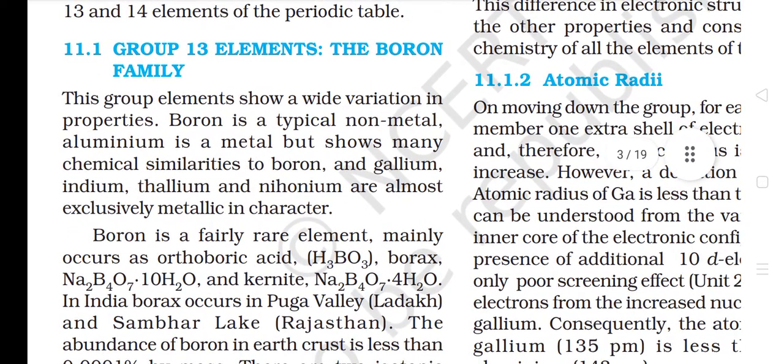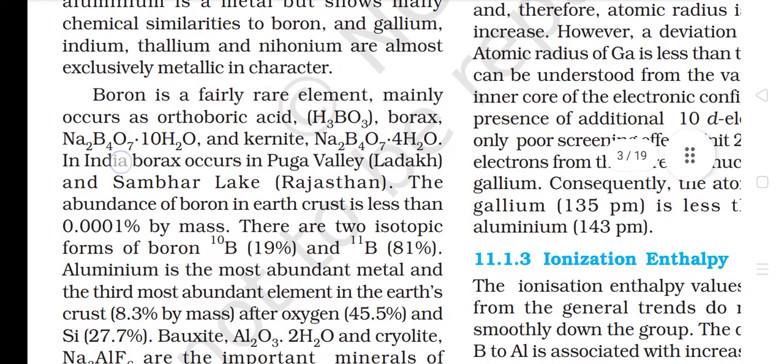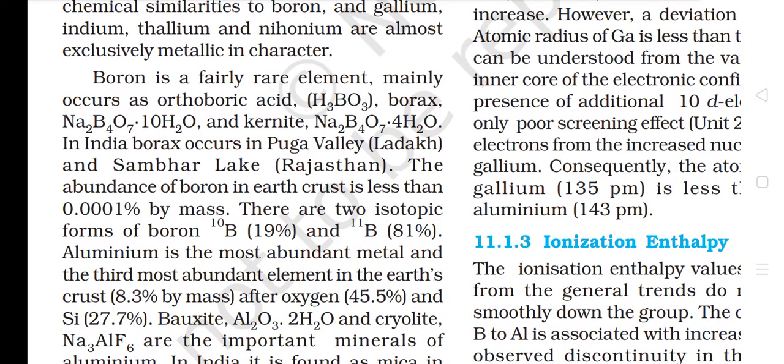11.1 Group 13 Elements: The Boron Family. This group of elements shows a wide variation in properties. Boron is a typical non-metal; aluminum is a metal but shows many chemical similarities to boron; and gallium, indium, thallium and nihonium are almost exclusively metallic in character. Boron is a fairly rare element, mainly occurring as orthoboric acid H3BO3, borax Na2B4O7·10H2O and kernite Na2B4O7·4H2O.